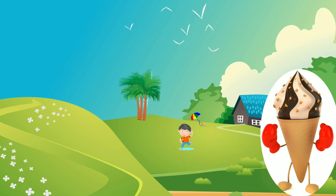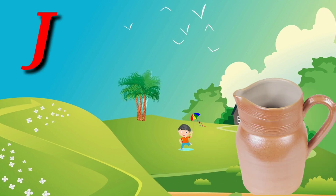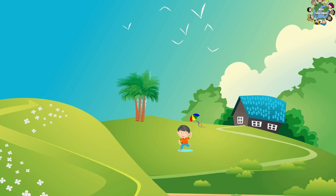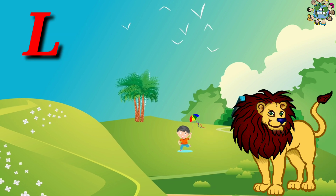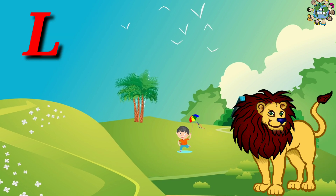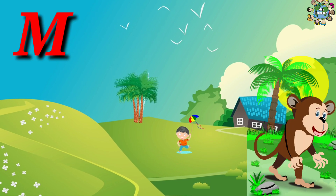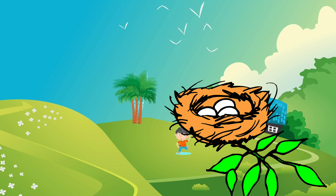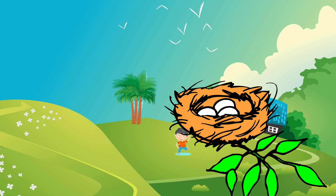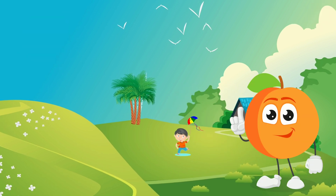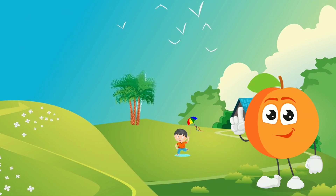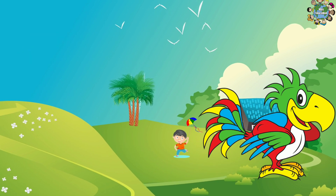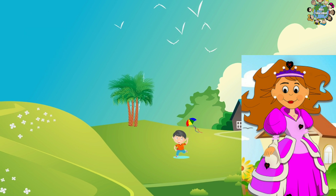I for Ice cream, J for Jack, K for Kite, L for Lion, N for Nest, O for Orange, P for Parrot, Q for Queen.